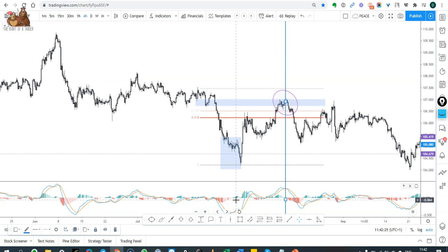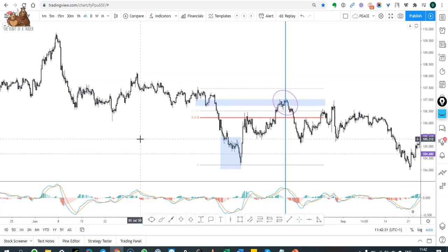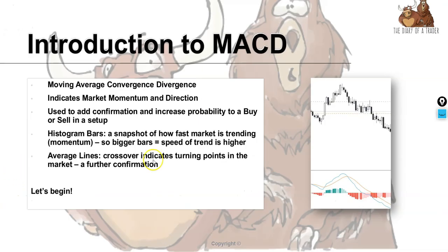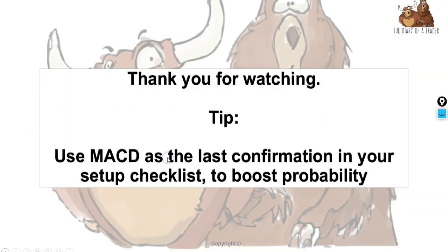That's what the MACD helps with — it's used as an indicator. Just as a reminder, an indicator does not tell you the future; it indicates what may be happening to the price and the direction it's going to go in. As a final tip: use the MACD indicator as your last confirmation in your setup checklist — your checklist of rules for every setup you take — to boost the probability of your trades. Trade carefully, trade safe, and good luck. Thank you very much for watching.